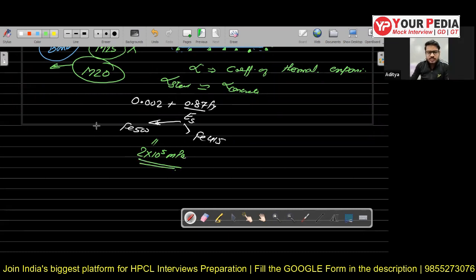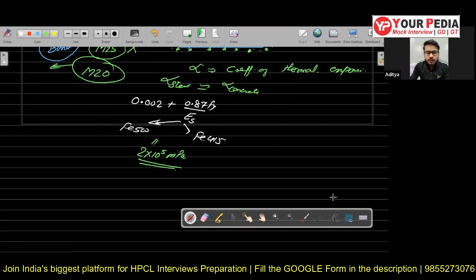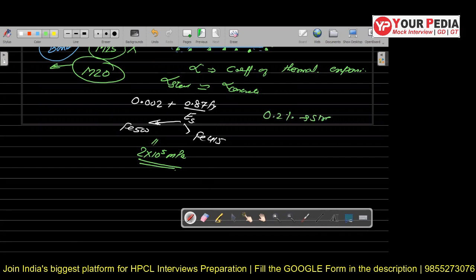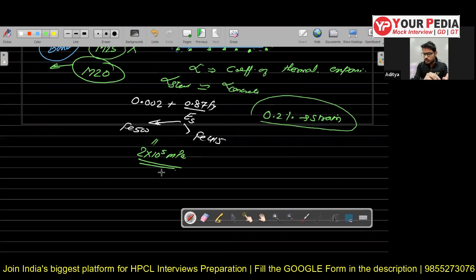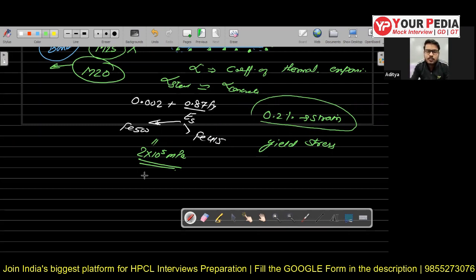If we look at the stress-strain diagram, we can see that from mild steel we obtain Fe 415 due to the strain hardening effect. We calculate the Es value for Fe 500 and Fe 415 using the 0.2% strain criteria. When we see the Fe 500 and Fe 415 stress-strain curve, we don't find a clear yield point as we do in mild steel. So we draw a line at 0.2% strain offset, and where it cuts the graph, that point is taken as the yield stress — and that's how we calculate it.